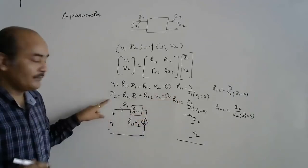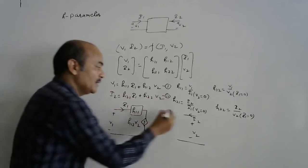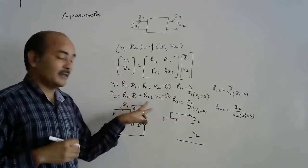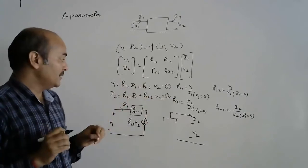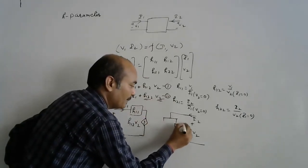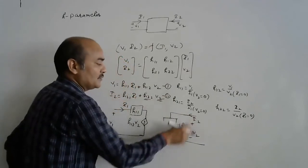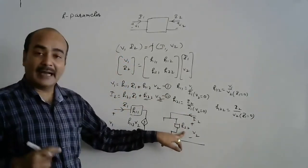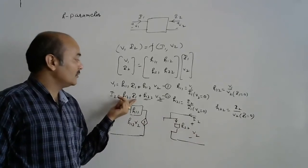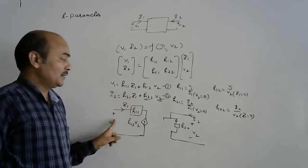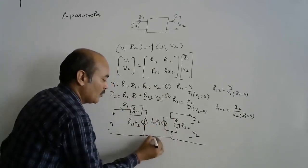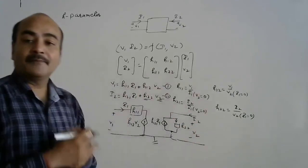For the second equation, I2 consists of two current terms connected in parallel. H22 is an admittance, so the current through it is H22·V2. The second term depends on input current, so we introduce a current-dependent current source with value H21·I1. This completes the equivalent circuit model of the H parameter.